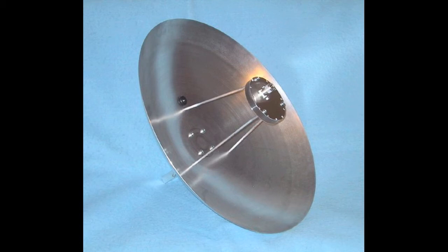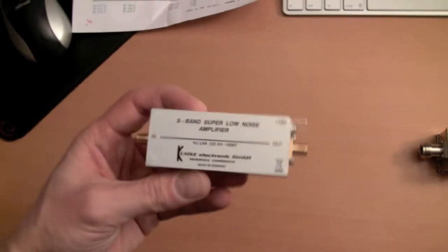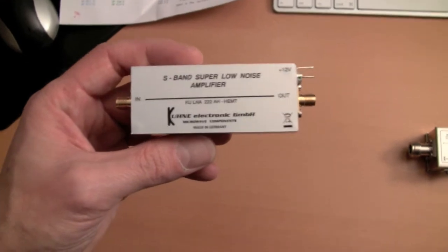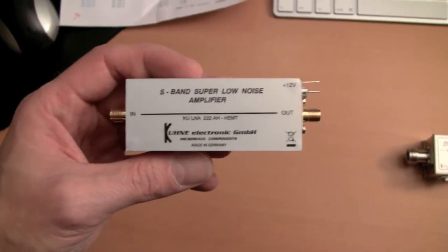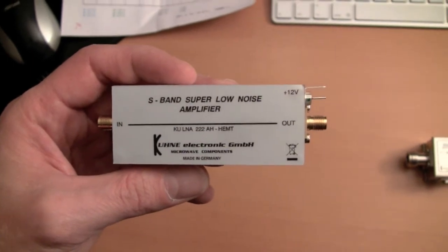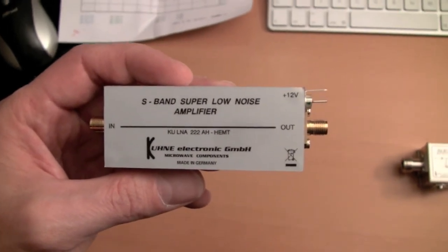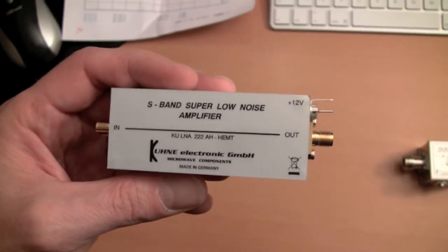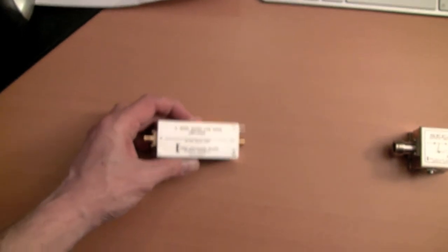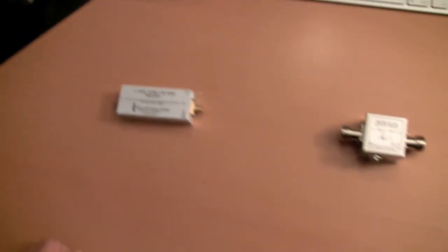Now let's have a look at the other components in the system. This is the low noise amplifier from Kuhne Electronik. It performs very well, very high performance, very low noise. 0.5 dB noise figure and 30 dB gain, which at 2.2 GHz is very good. It's excellent, in fact.